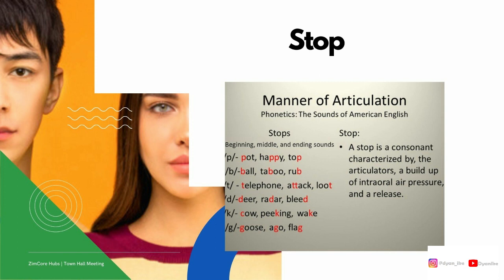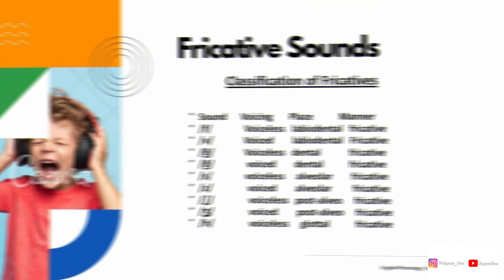We have D for 'deer,' 'rudder,' and 'bleed'; K for 'cow,' 'peeking,' and 'wake'; and the last, G for 'goose,' 'ago,' and 'flag.' So those are the stop sounds for consonants.